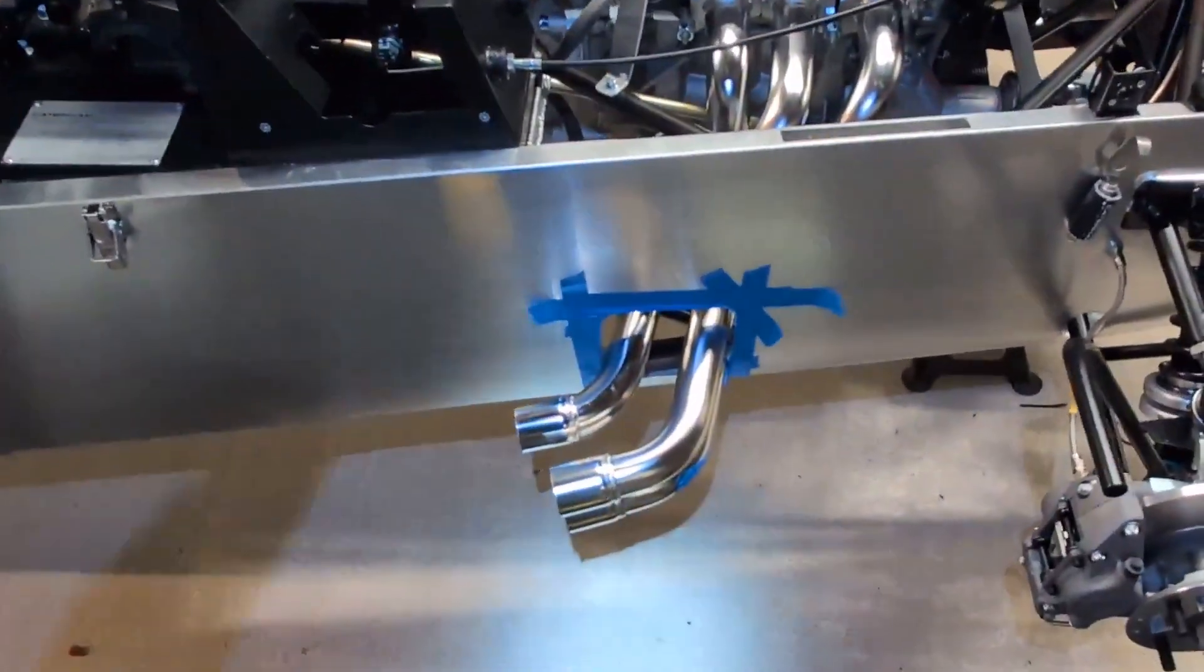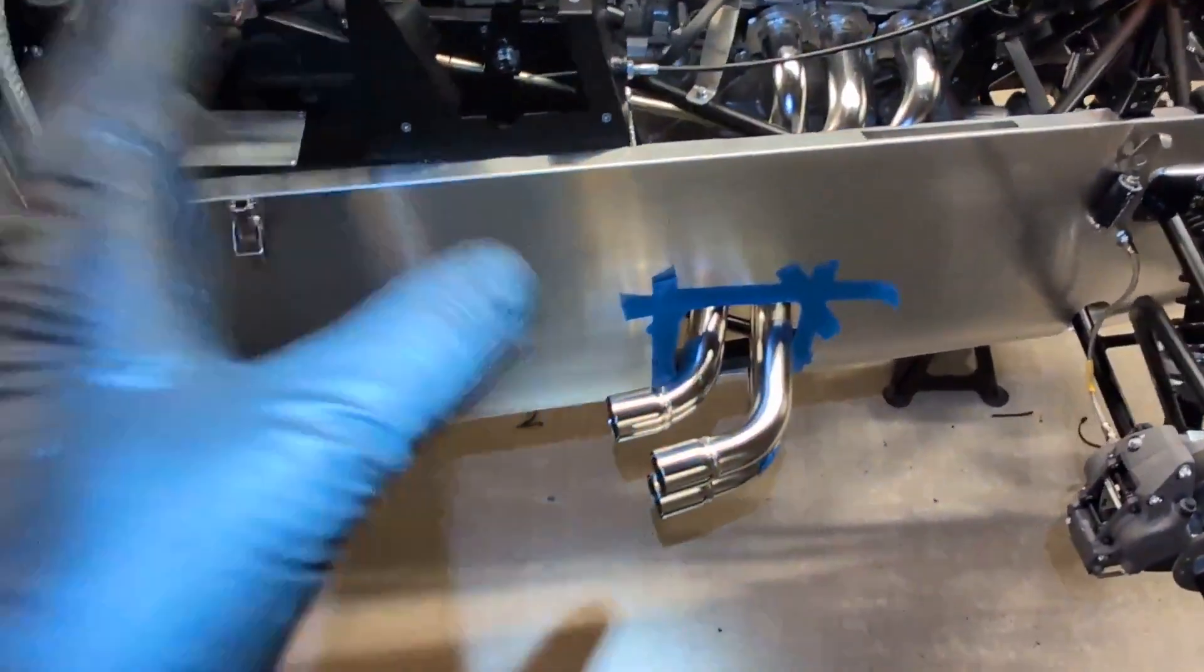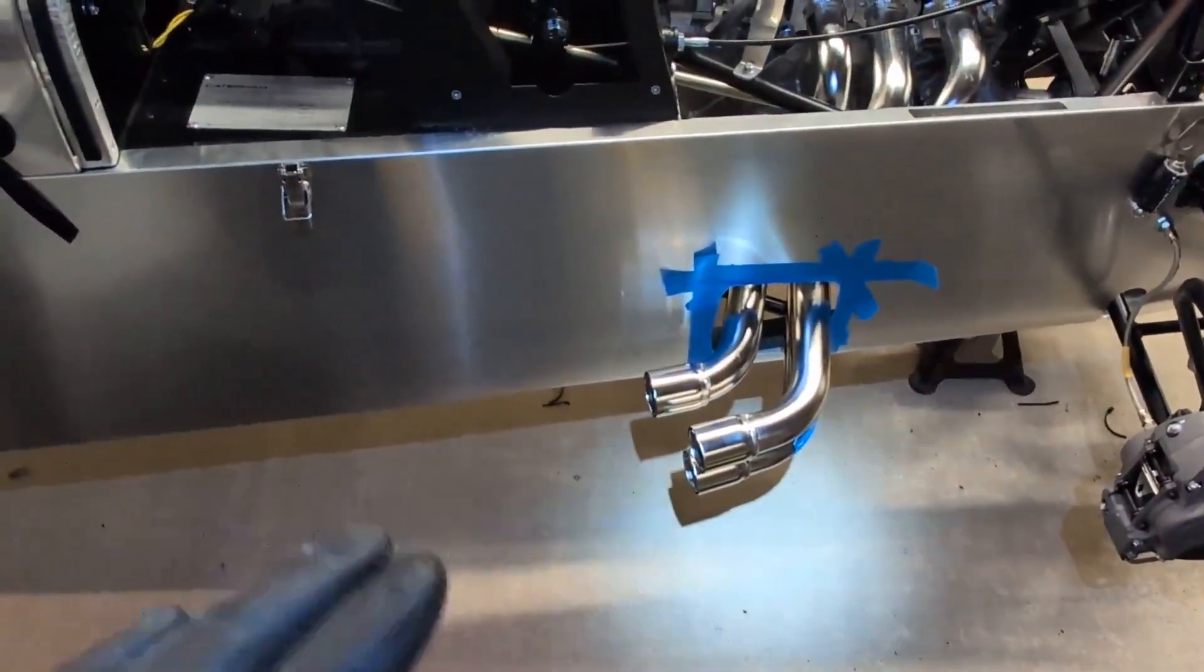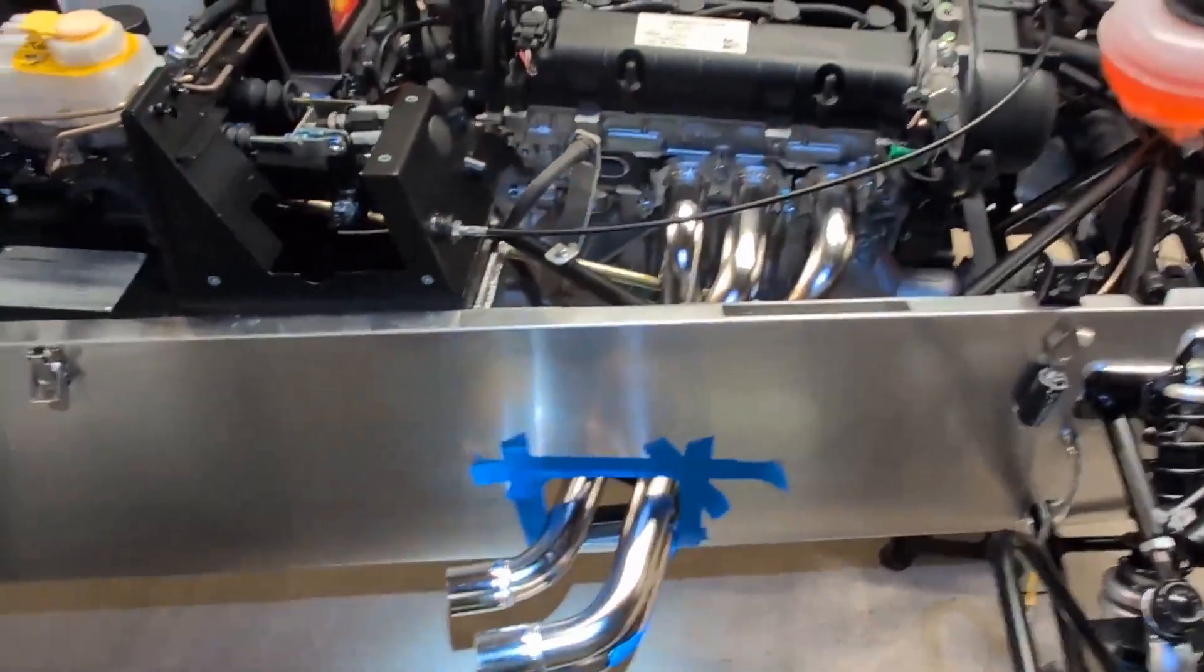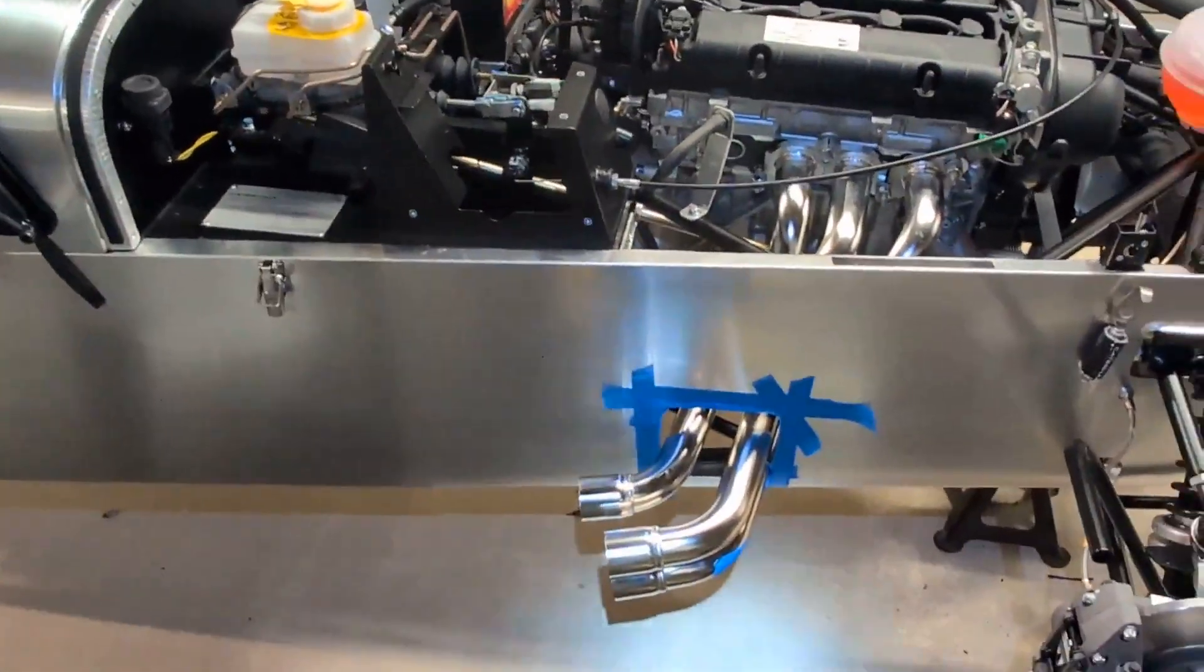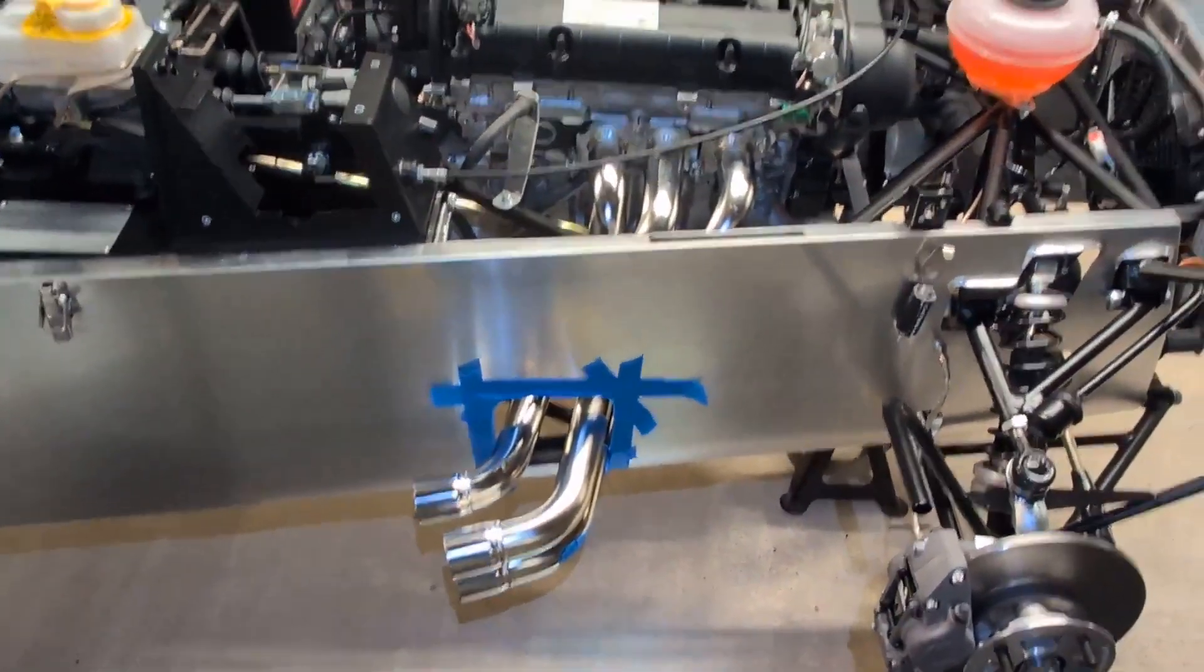I will go get the cat and then before I tighten anything up, I'm going to get the cat loosely mounted up as well. Just to make sure, because I'm sure there's some tolerance in here to factor in. So that's the plan. One more runner, cat, get them all torqued up on the head.